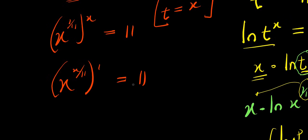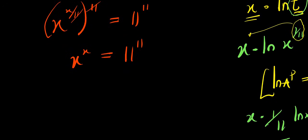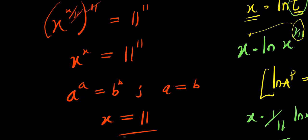The next step is to raise each part of this equation to the power 11. So x power x over 11 raised to 11 gives x power x, and 11 raised to 11 gives 11 power 11. Now, using the identity: if a power a equals b power b, then a equals b. So from x power x equals 11 power 11, we get x equals 11.